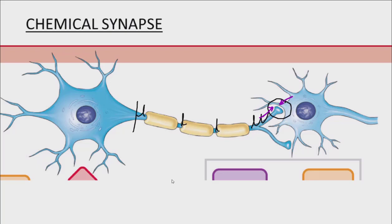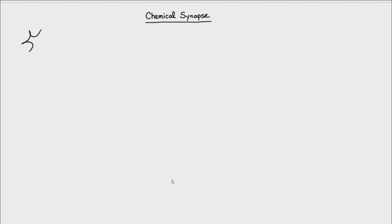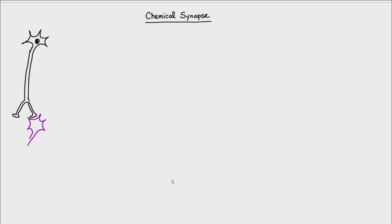So the first thing we're going to do is take some time to diagram out a chemical synapse. If you have multiple colored pens or pencils, this is an excellent time to use them. Let's first draw a simplified version of a neuron and give it two axon terminals, and we'll have one of those axon terminals synapse to the cell body of another neuron. We're going to draw what's in that little box.